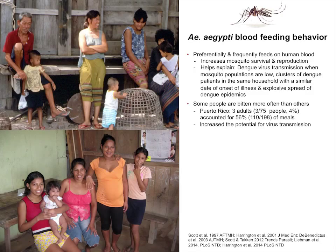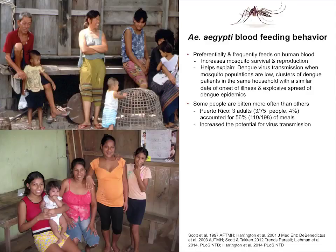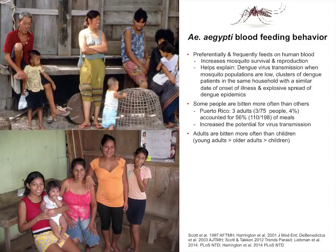Some people are bitten more often than others. In Puerto Rico, we did a study where 75 people lived in a village — three of those people accounted for more than half the blood meals. Three adults were getting bitten way more than others, and mathematically, that kind of differential feeding on certain individuals actually increases the chances for the virus to get transmitted. Adults tend to be bitten more often than children; it's the young adults that get bitten most, then older adults, then children — which is interesting because in many parts of the world dengue is seen as a pediatric disease.